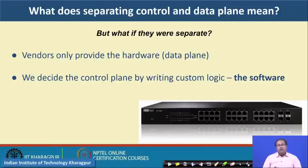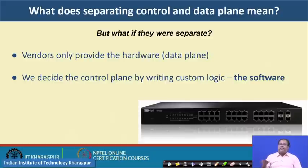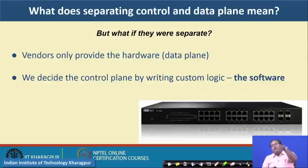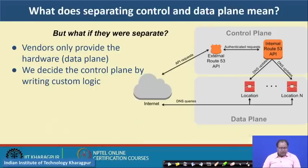The idea in SDN is to separate out the control plane and the data plane. The vendor will only provide the hardware — that is the data plane — and we decide the control plane by writing custom logic, which is the software. The control plane will be decided by the application designer, network manager, or network support team, whereas the data plane will only come from the vendor. The vendors will deliver a dumb switch that just has the TCAM hardware along with the forwarding engine — the control logic is not there; we implement our own control logic.